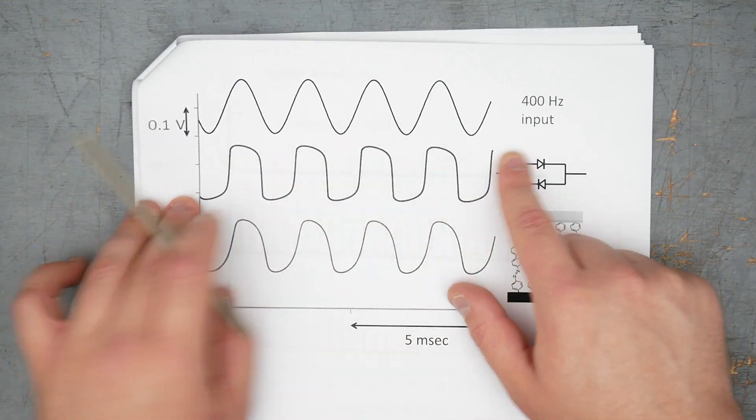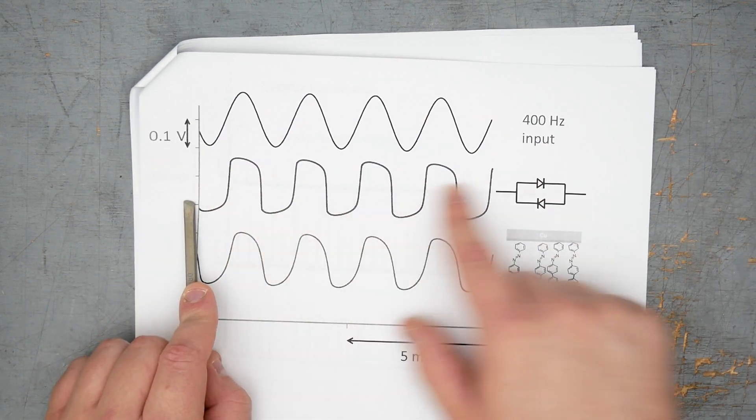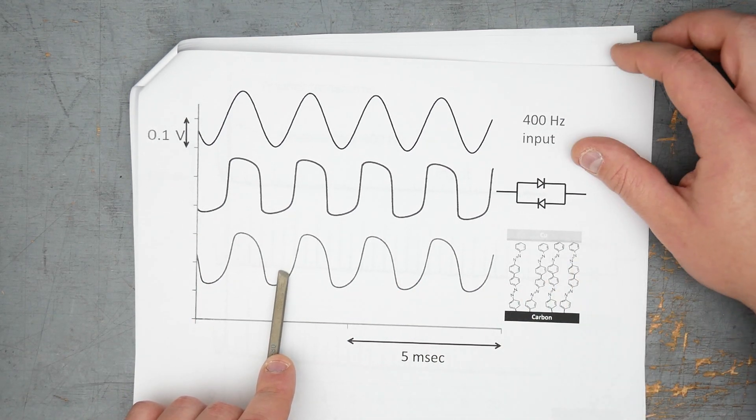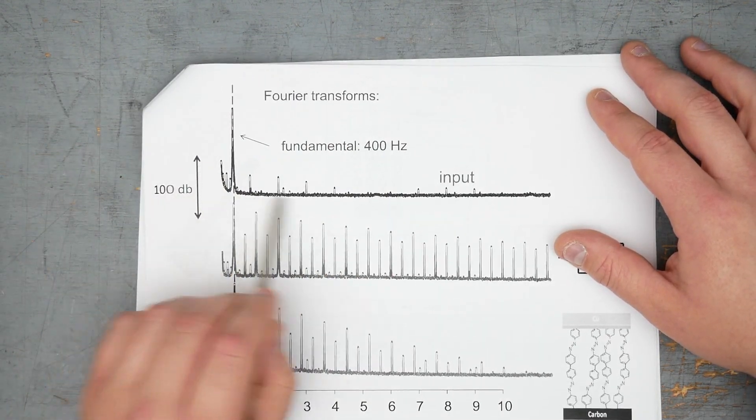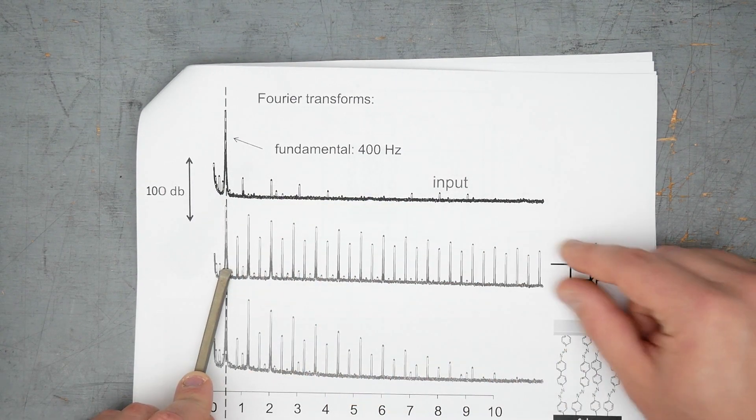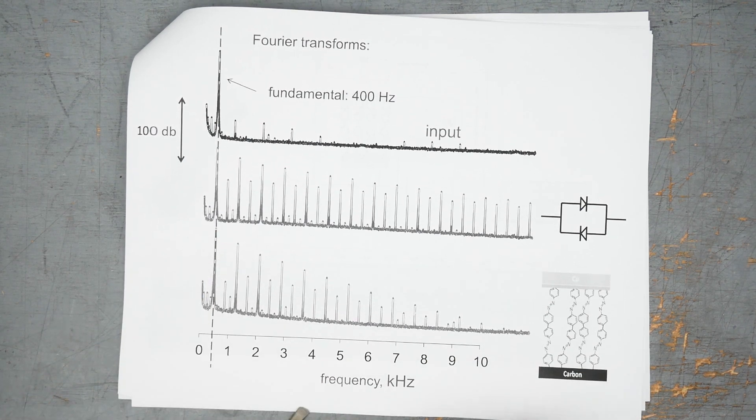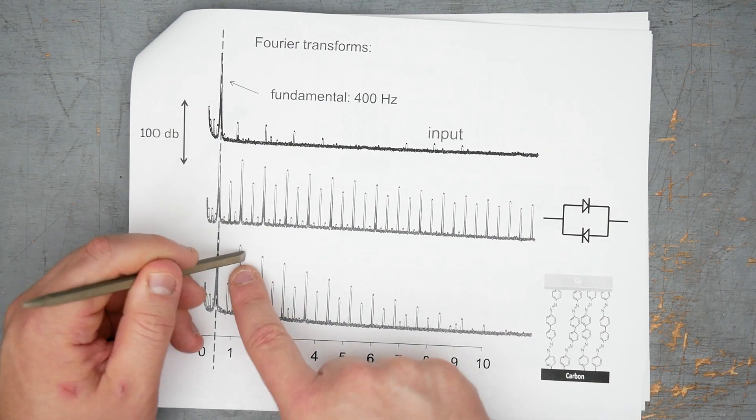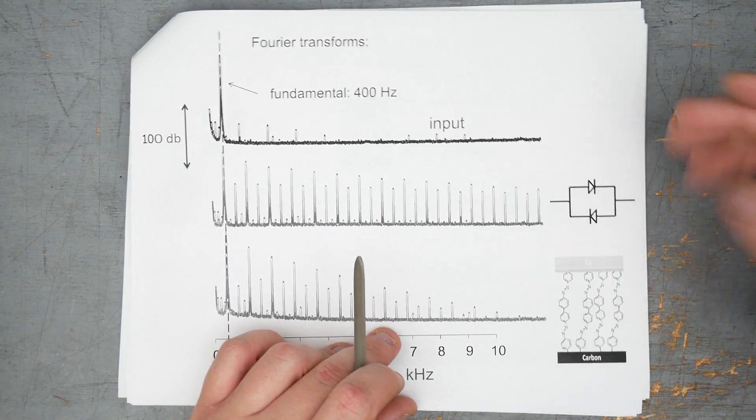Here's clipping as a function of time, where you have your essentially sine wave coming in, 400 hertz sine wave. Here's clipping with standard silicon diodes, and then here's the clipping waveform with the molecular junction. Here's some more Fourier transforms. The second order harmonic, which is usually the one that sounds pleasing to our ears, it's louder relative to some of these higher order harmonics, which I'm supposing that they probably will claim sounds more musical and better.